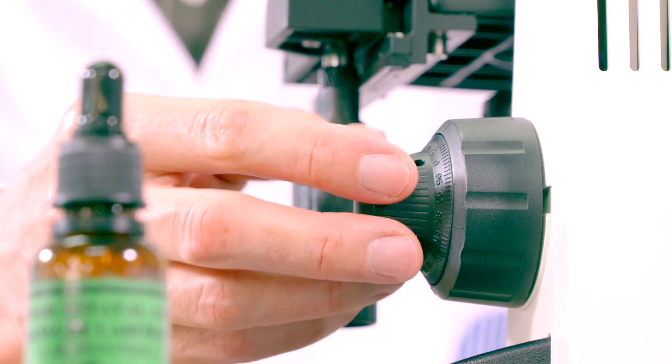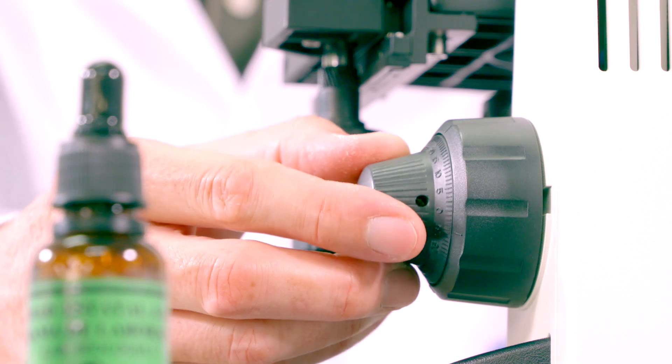Y, de nuevo, con la perilla micrométrica, vamos a enfocar bien nuestra muestra. Aquí, ustedes pueden observar mejor las células.